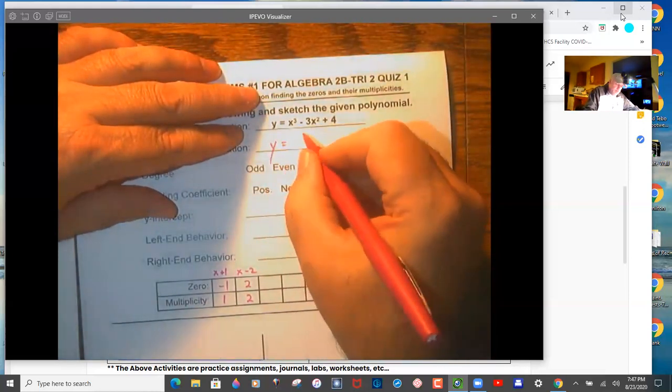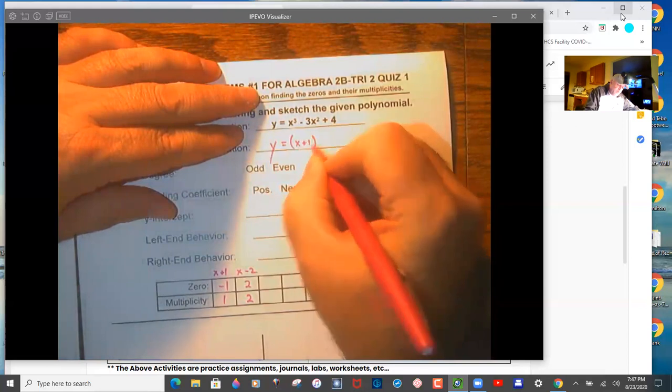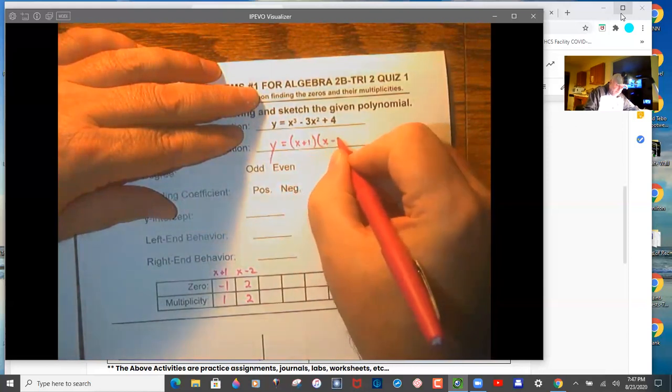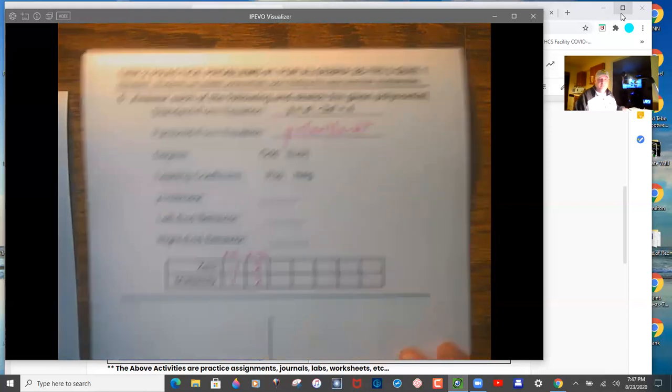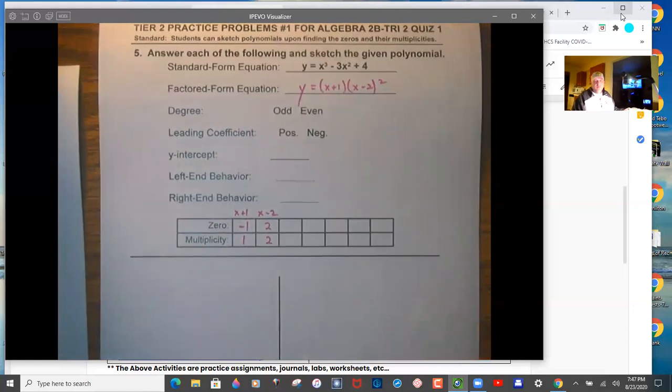So then you can write out x plus one. Make sure you get the factors. It's always opposite with the factors from the zero. So the reason is that when you put in the x value that's a zero, it gives you zero for y. That's why they call them zeros. The whole overall thing is zero when you multiply it out.